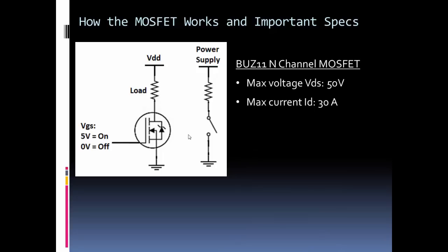Max current, typically referred to as ID, the drain current, is 30 amps for this one. So you can see this MOSFET can handle a good amount of power.